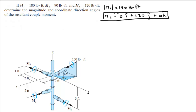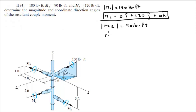One down, three to go. M2 has a magnitude of 90 foot-pounds and M2 is going straight in the negative x direction, parallel to the x-axis towards the negative x, so the Cartesian vector form of M2 is equal to -90i + 0j + 0k.